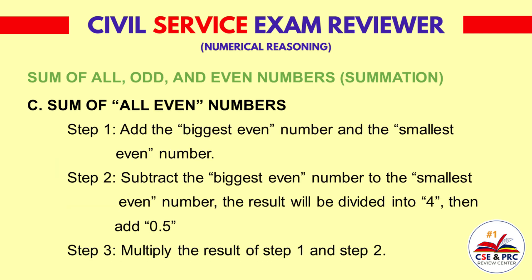C. Sum of All Even Numbers. Step 1: Add the biggest even number and the smallest even number. Step 2: Subtract the biggest even number from the smallest even number, divide the result by 4, then add 0.5. Step 3: Multiply the result of Step 1 and Step 2.